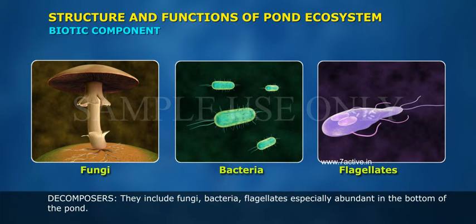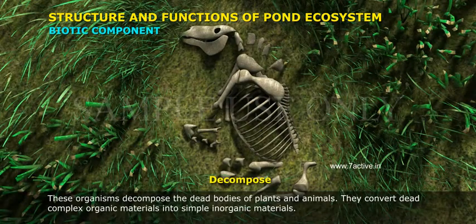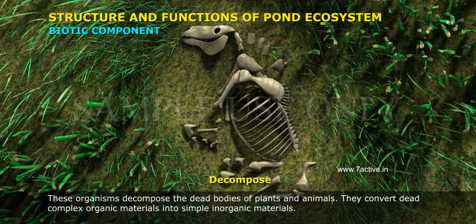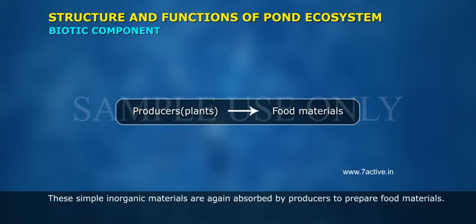Decomposers include fungi, bacteria, and flagellates, especially abundant at the bottom of the pond. These organisms decompose the dead bodies of plants and animals, converting dead complex organic materials into simple inorganic materials. These simple inorganic materials are again absorbed by producers to prepare food.